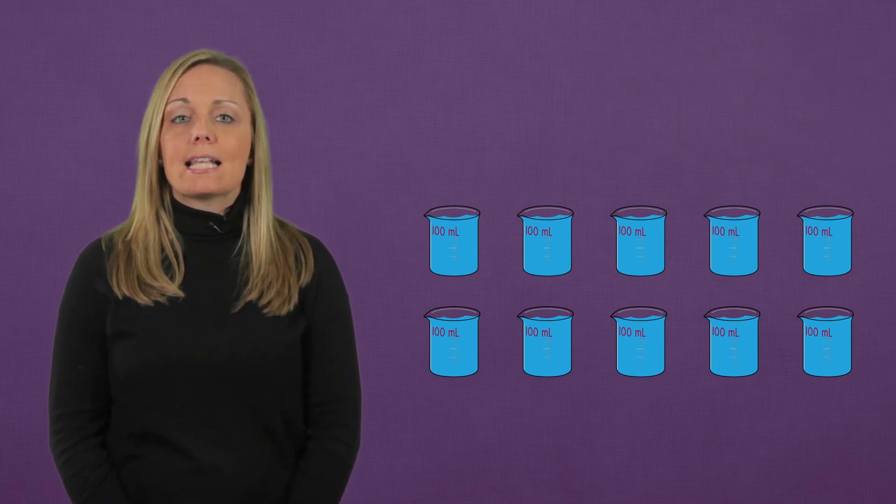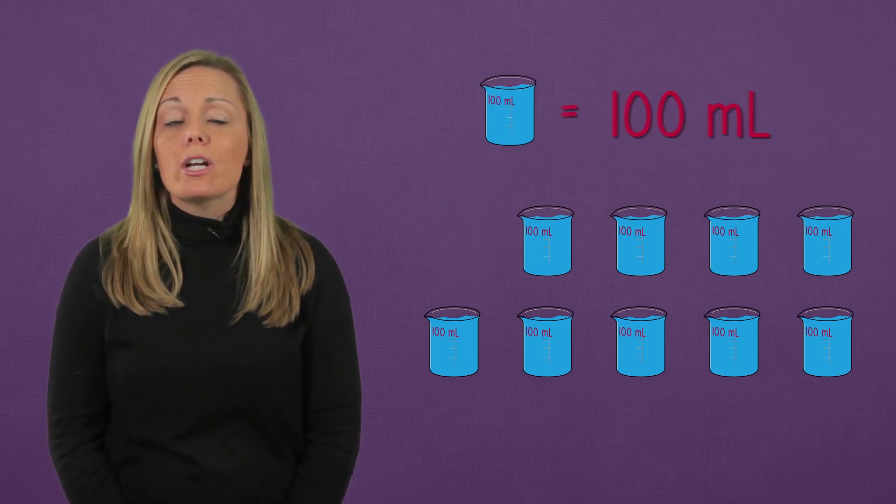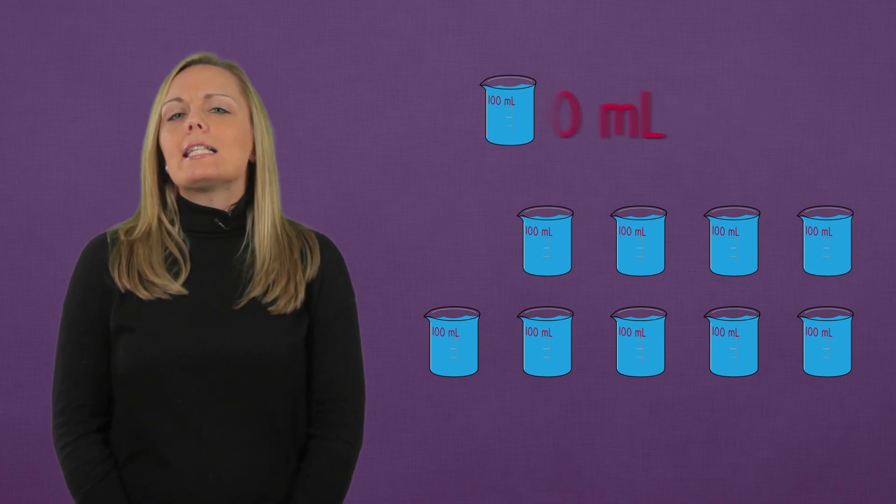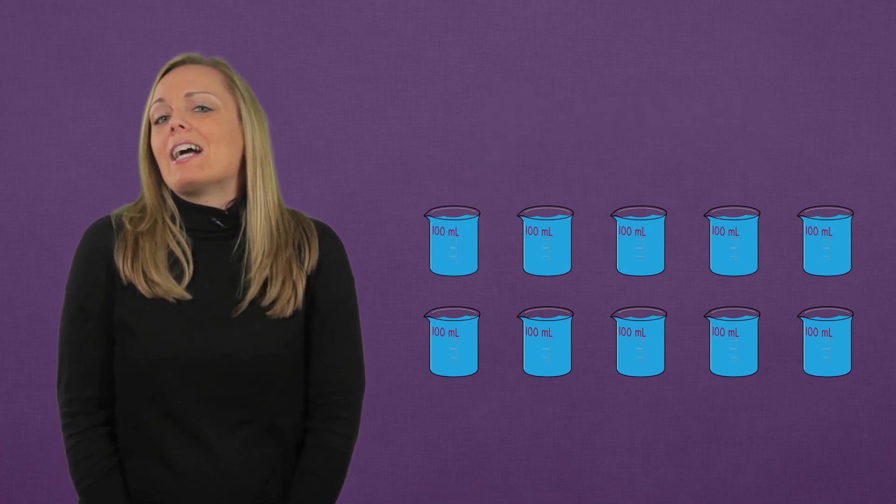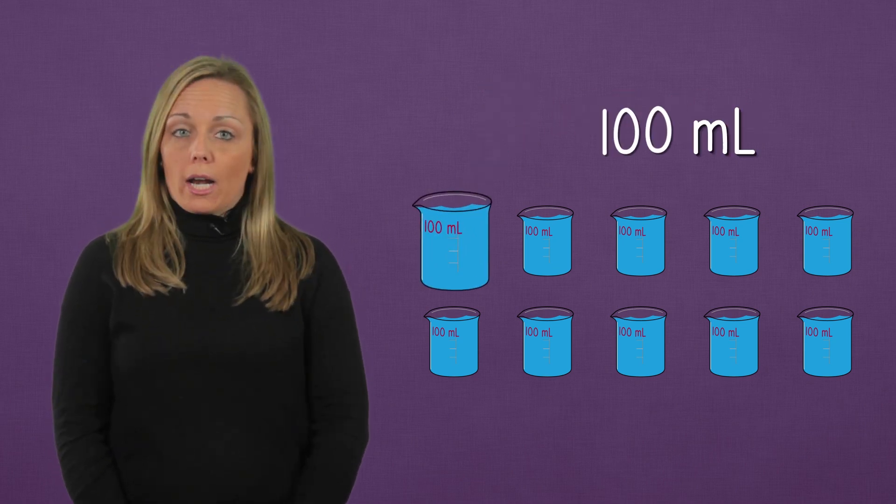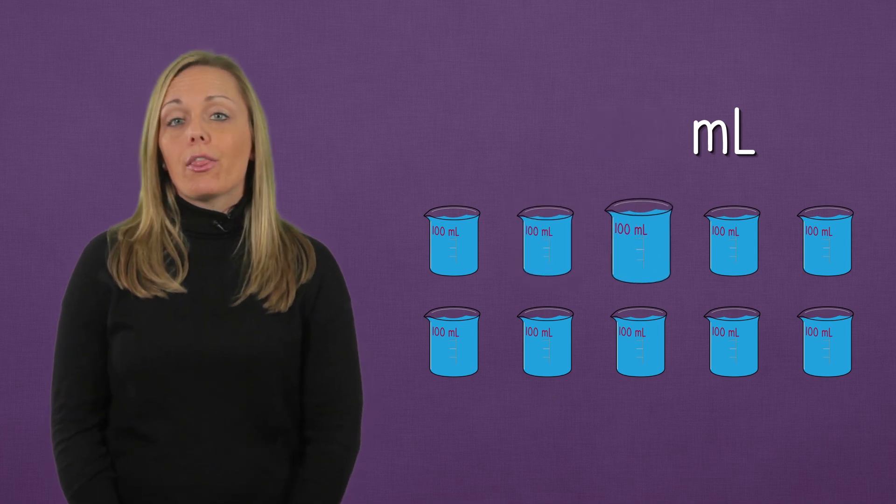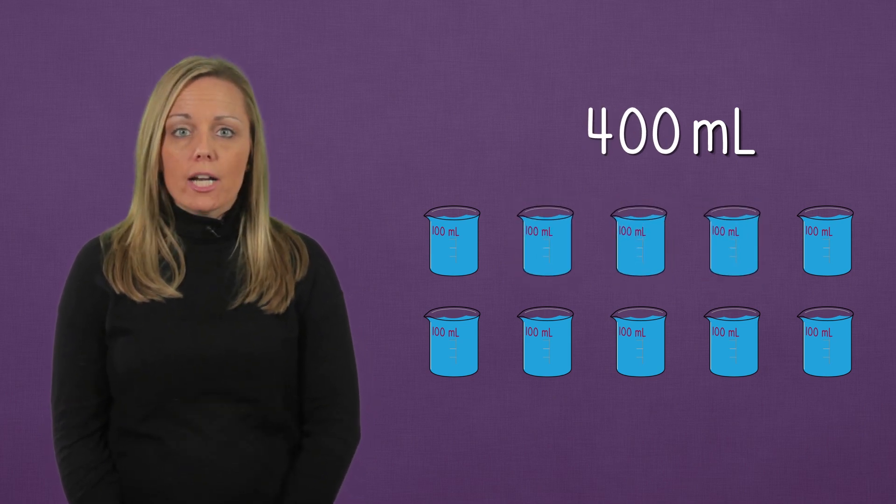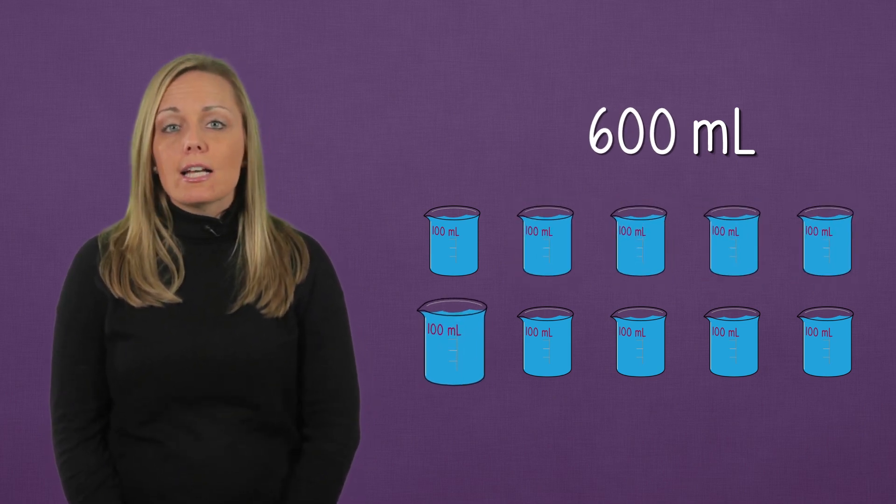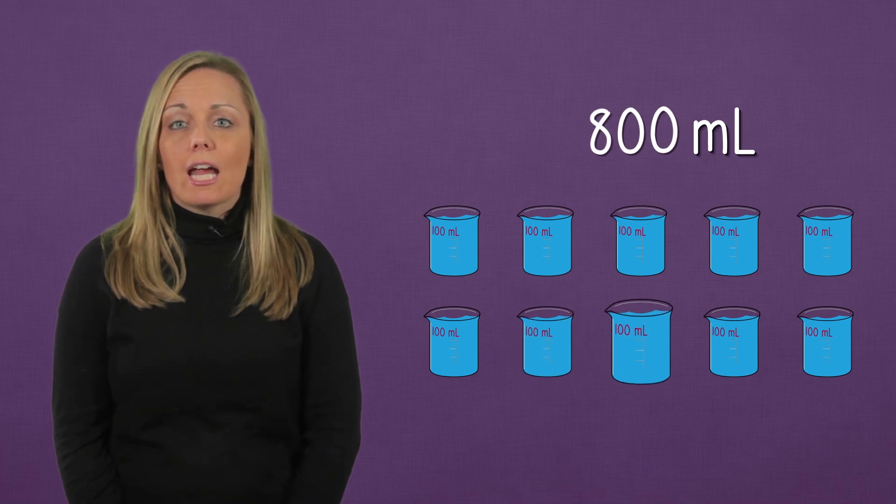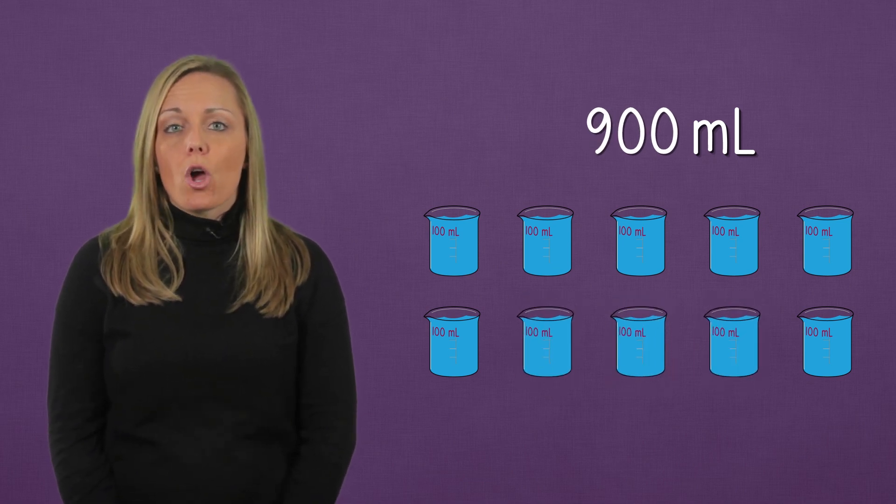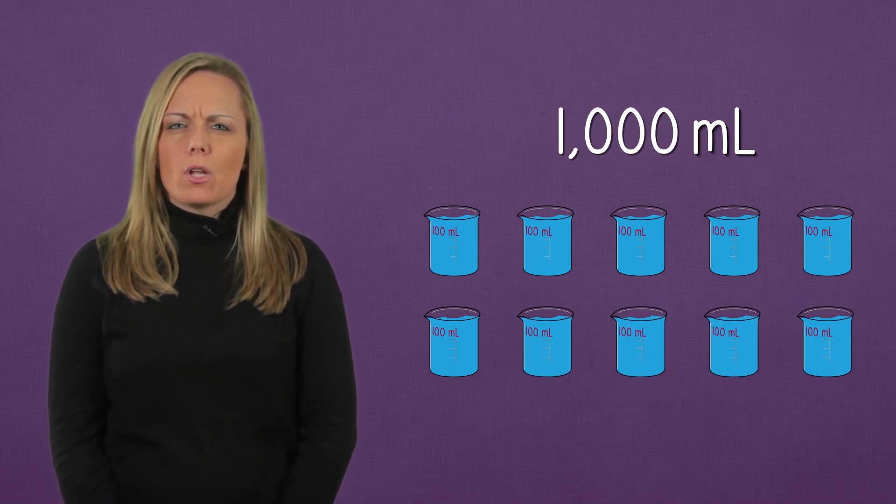Each of these cups has a liquid volume of 100 milliliters. Let's skip count by 100 to find our total. 100, 200, 300, 400, 500, 600, 700, 800, 900, 1000.